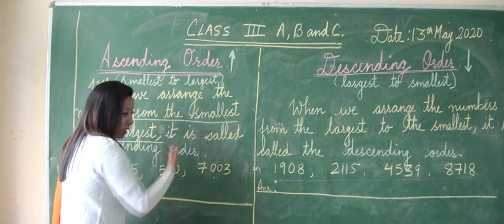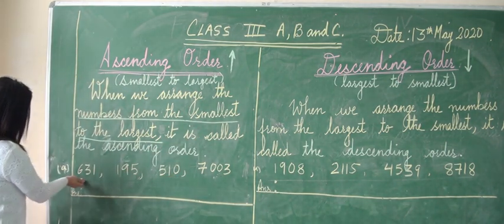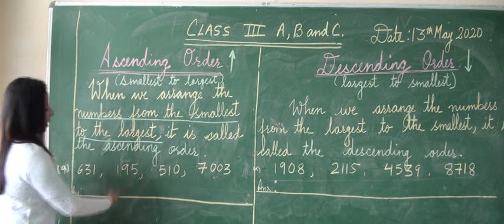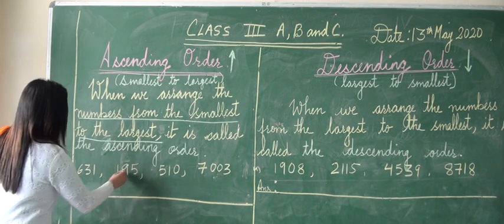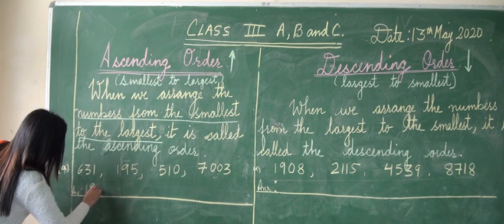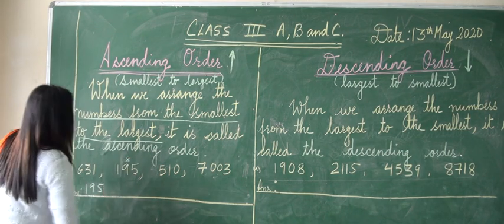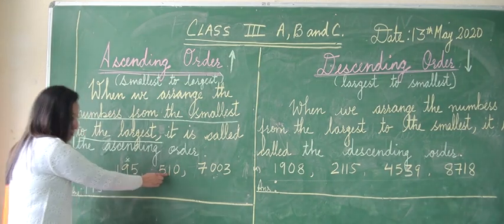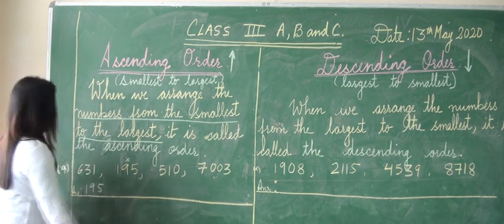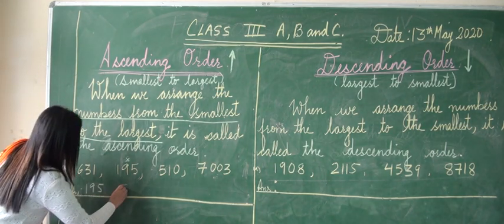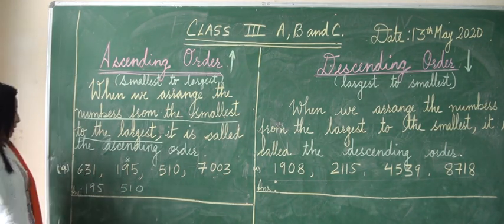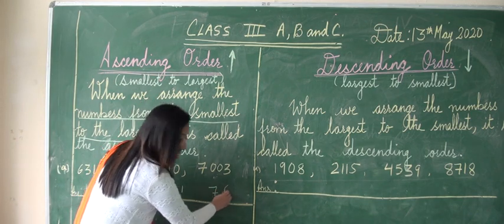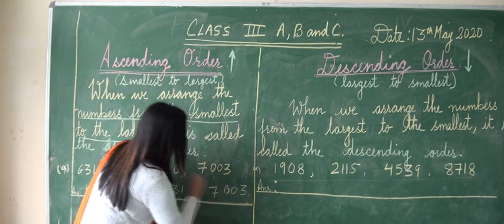But we are looking for the smallest number. Compare these numbers — 195 is the smallest number. Write down 195 and put a small cross over it so that you do not get confused. Now compare the remaining numbers: 5 is smaller than 6, so write down 510, then comes 631, and as I told you, 7003 is the greatest number.